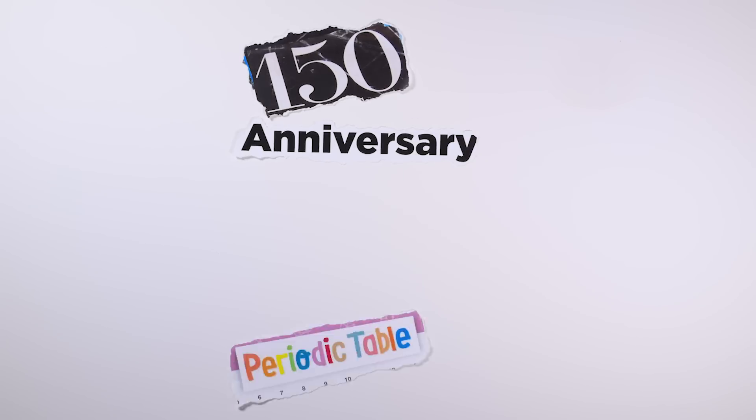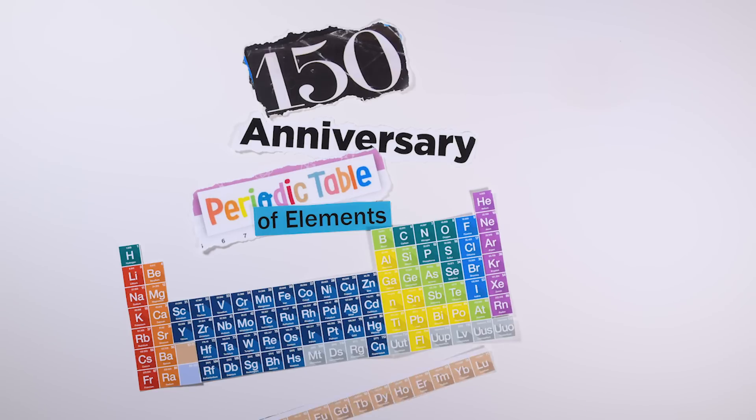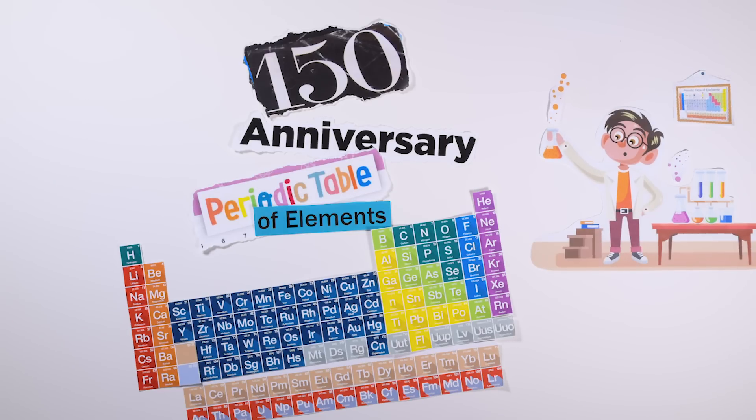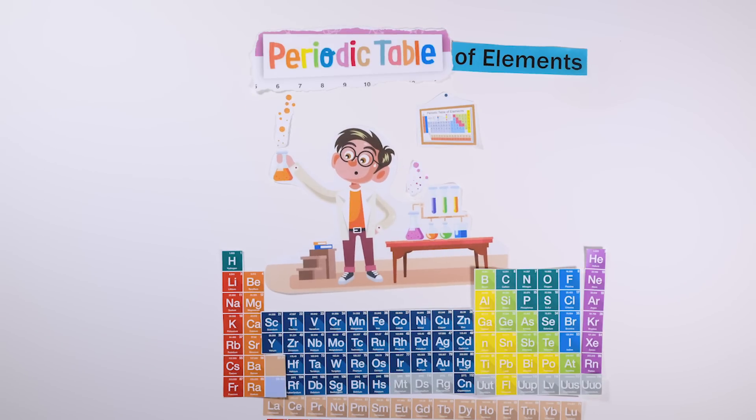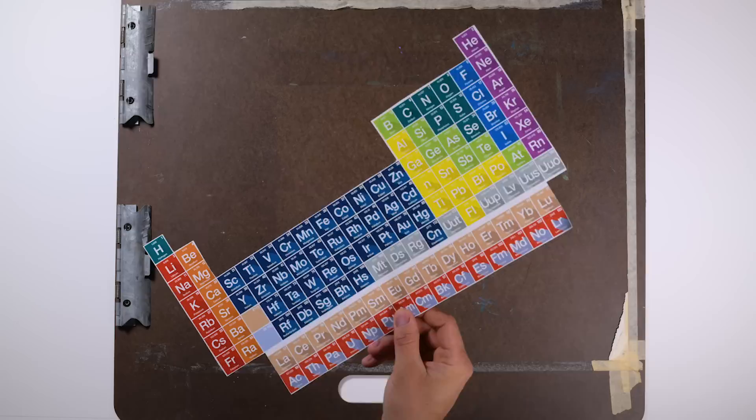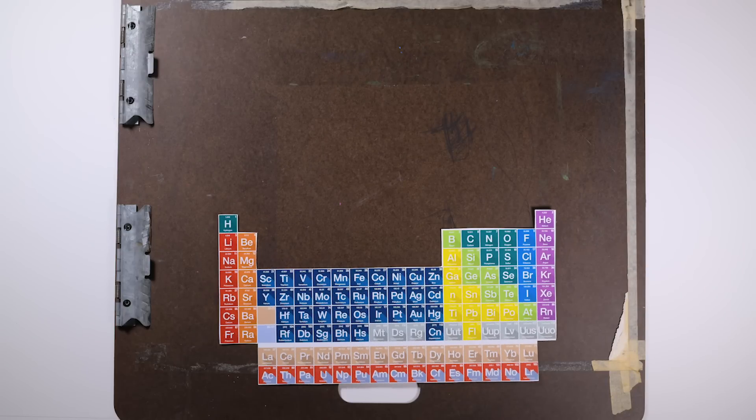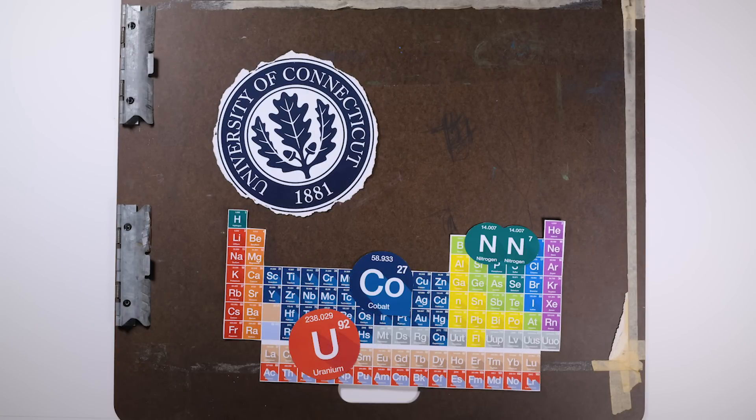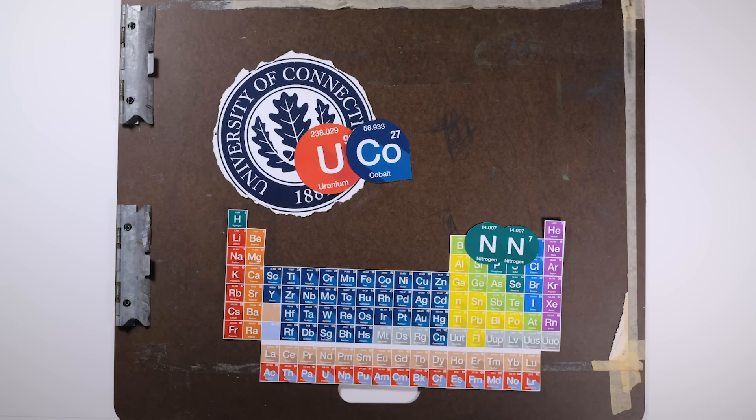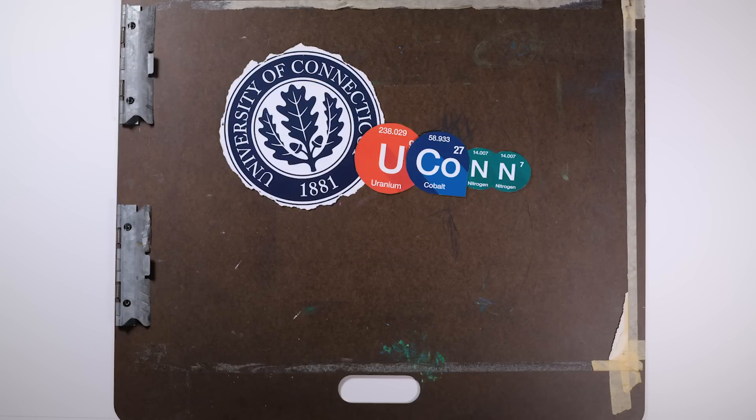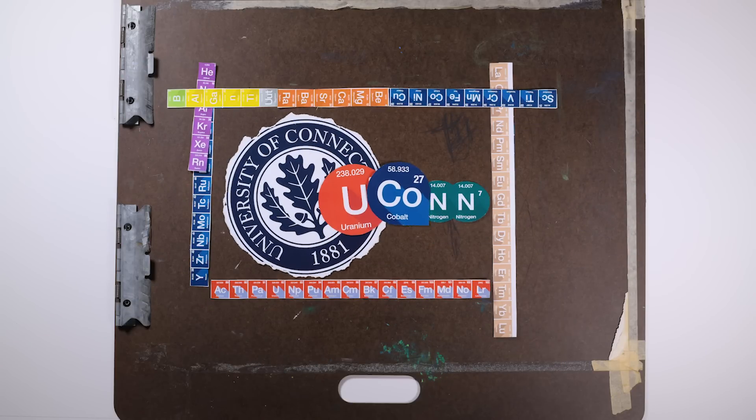This year is the 150th anniversary of the Periodic Table, the classic arrangement of elements everybody meets in basic chemistry. One of the many great things about the Periodic Table is that each element has a letter or two that represents it. For example, Yukon spells uranium, cobalt, nitrogen, nitrogen.